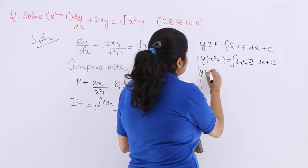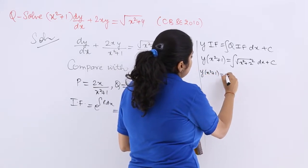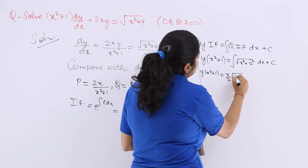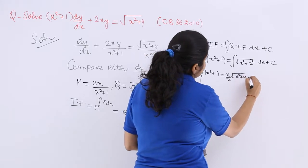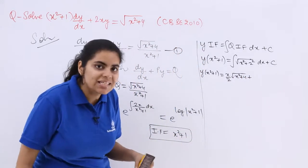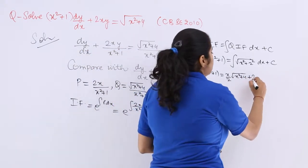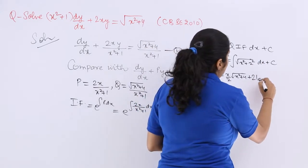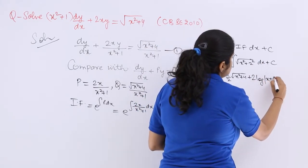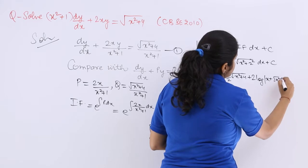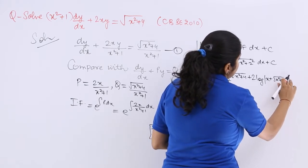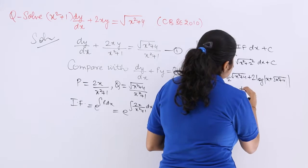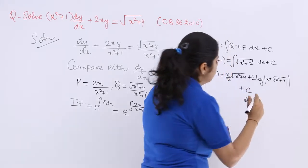So according to that y(x²+1) = x/2 √(x²+4) + (a²/2) means 2 log|x + √(x²+a²)| and this should be nothing but + c as the constant of integration.